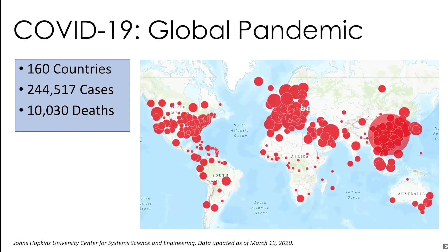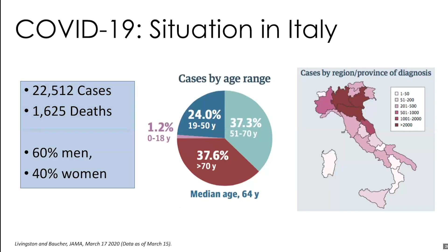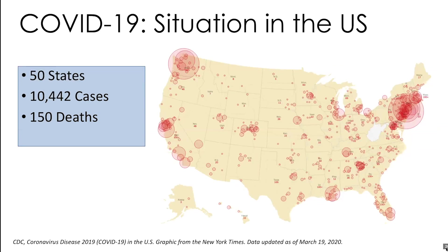Looking at what's been happening in the world, COVID-19 is now in 160 countries. As of March 19th, there were 244,517 cases and over 10,000 deaths. Italy has become probably the epicenter of the disease in Europe, with 22,000 cases and over 1,600 deaths. Their cases are 60% men and 40% women, and about a third of their cases were in people over 70. In the United States, there have been cases in all 50 states, with main epicenters in Washington, California's Bay Area, and New York — 10,442 cases and 150 deaths as of yesterday.